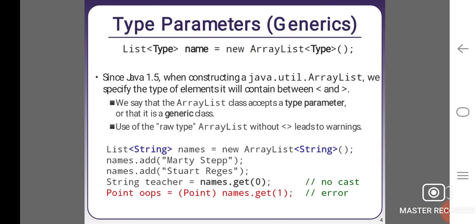List within the tag - we have to give the type name and new ArrayList within a tag type. Since Java 1.5 when constructing java.util.ArrayList we specify the type of element it will contain between these open and close tags. We say that the ArrayList class accepts a type parameter or that it is a generic class.